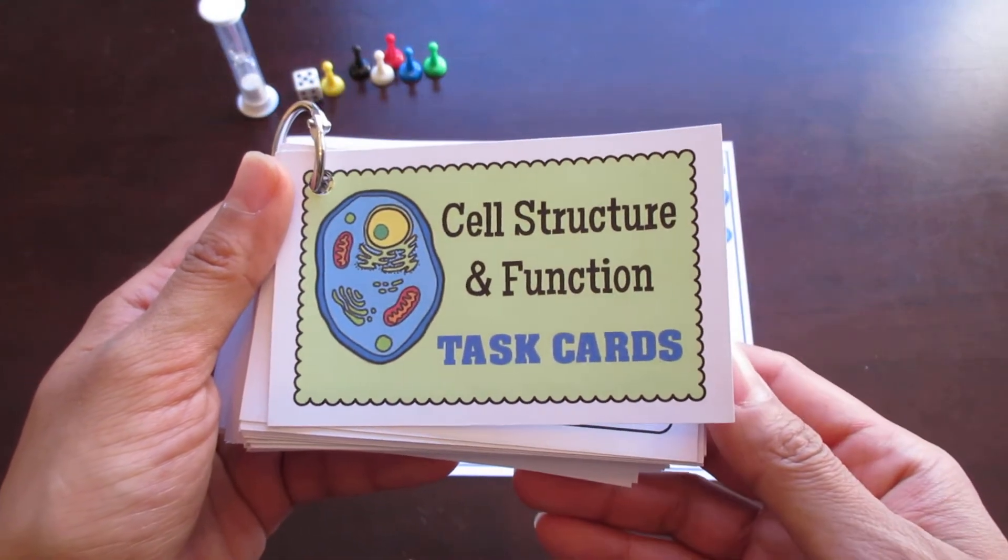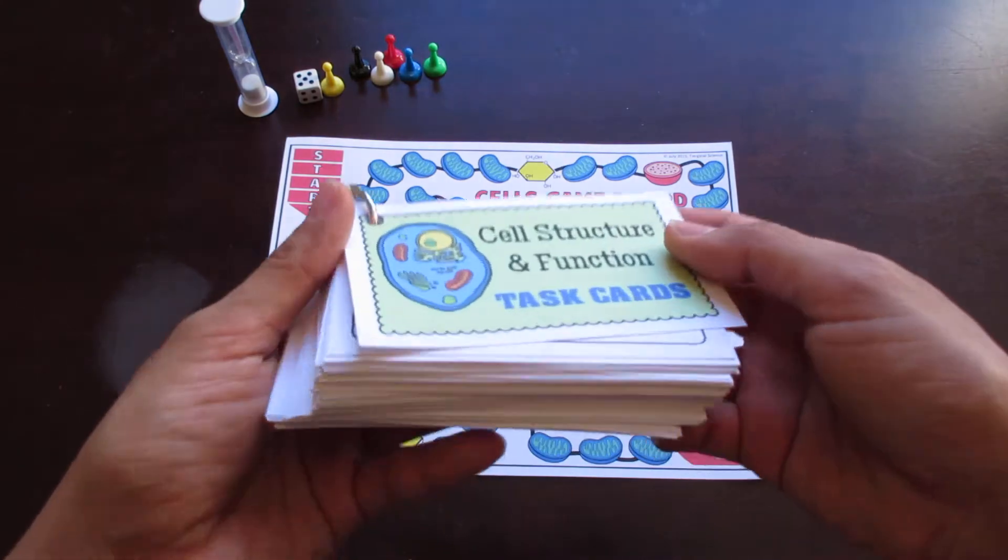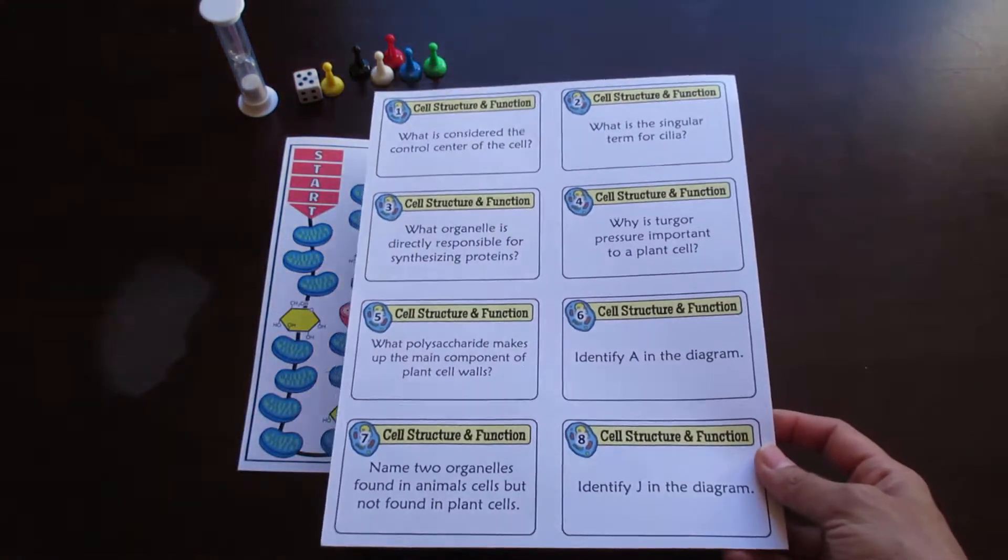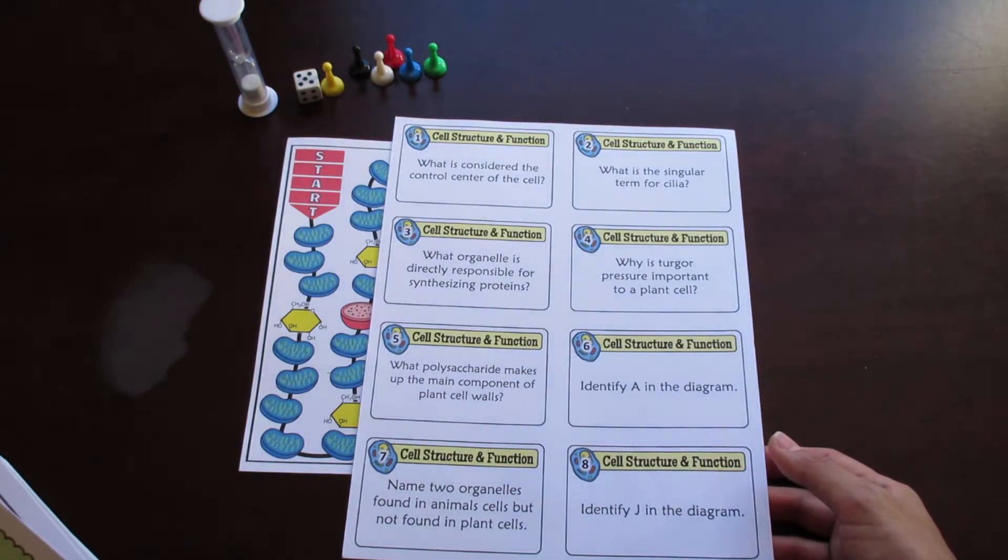This is the Tangstar Science Cells Task Card with Game Board. This set contains 80 task cards, and unlike most task card sets which are printed four to a page, this one's printed eight to a page to help save on printing paper and laminating costs.